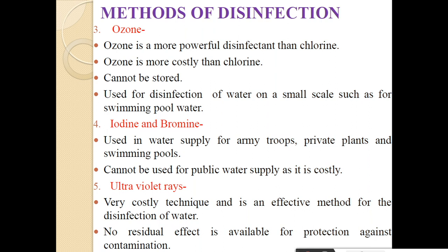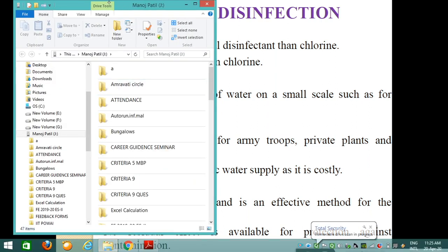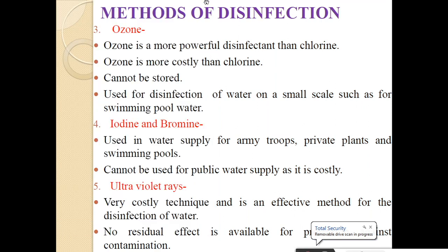Next one is iodine and bromine. Iodine and bromine are used in water supply for army troops, private plants, and swimming pools. This cannot be used for public water supply because iodine and bromine are costly.